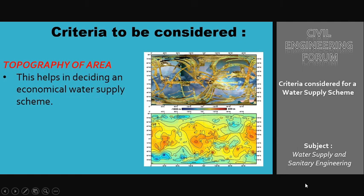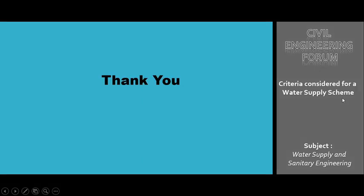The last criteria is the topography of the area, which helps in deciding an economical water supply scheme. The topographical map of the area to be served should be prepared and studied in relation to low-lying areas, ridges, and density of population. This topographic study helps in deciding an economical scheme, and sometimes the supply of water becomes even more economical if we take advantage of gravity, provided the source of water is available on a hillside. That was all about the criteria considered for a water supply scheme — thank you for watching.